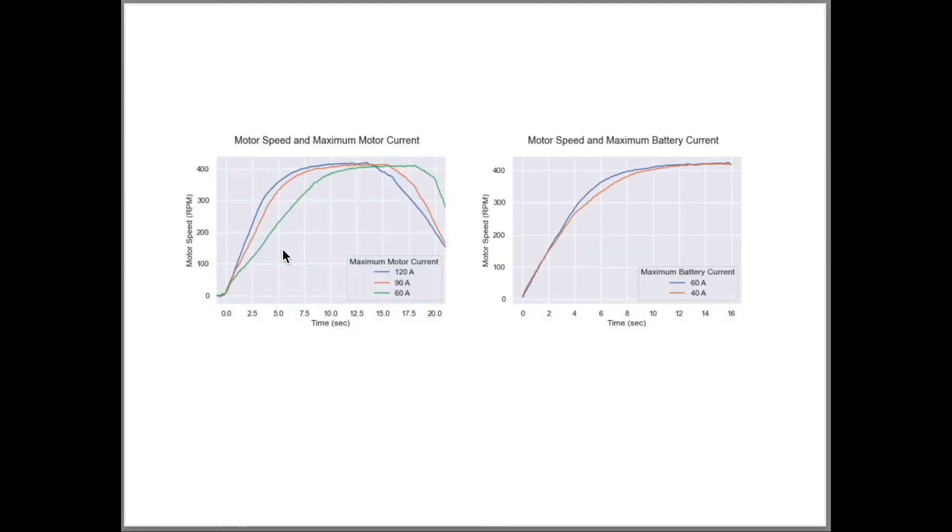So the takeaway is that if you want a high initial acceleration at low RPM, raise your motor current limit. And if you want to maintain that acceleration at higher RPM, raise your battery current limit.